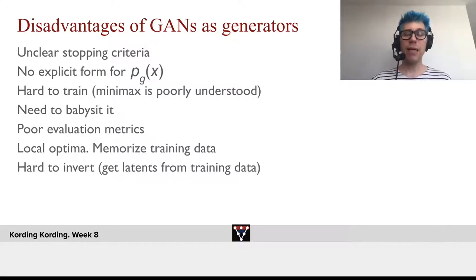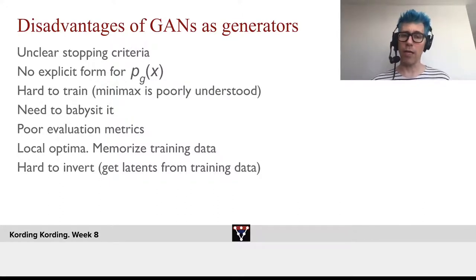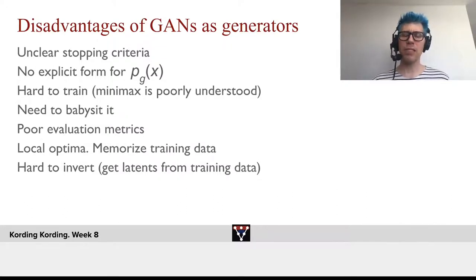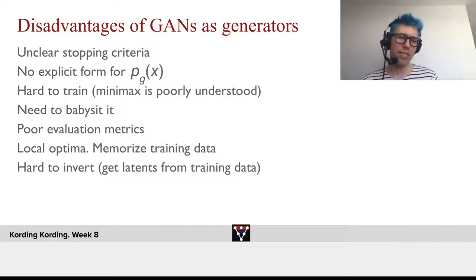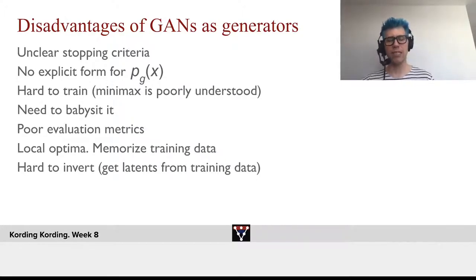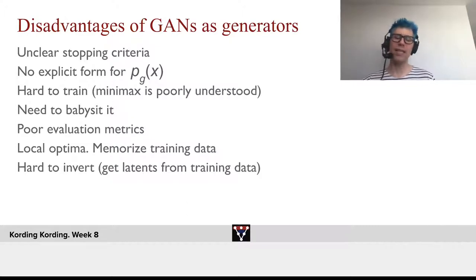But there are clear problems with GANs as generators. It's unclear when we should stop. There's no explicit way of getting at the probability distribution. It's hard to train because the minimax scenario that we have is rather poorly understood. In lots of ways, it's necessary to babysit those networks. There are so many ways how they go wrong, and success often requires us to understand where and how and why they go wrong.